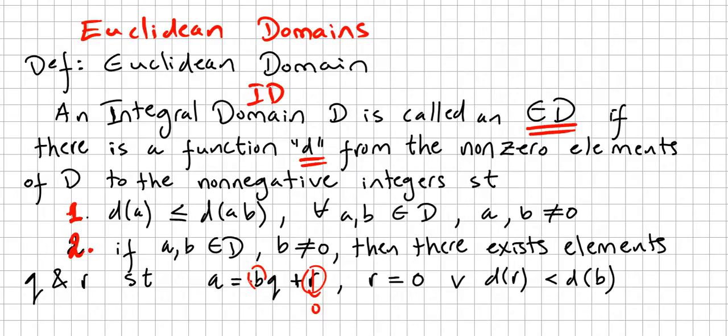We can see some very quick examples here. For instance, the ring of integers is a Euclidean domain. You need a function d, right? Let us say that d(a) is the absolute value of a. So the integers, the ring of integers, is a Euclidean domain.